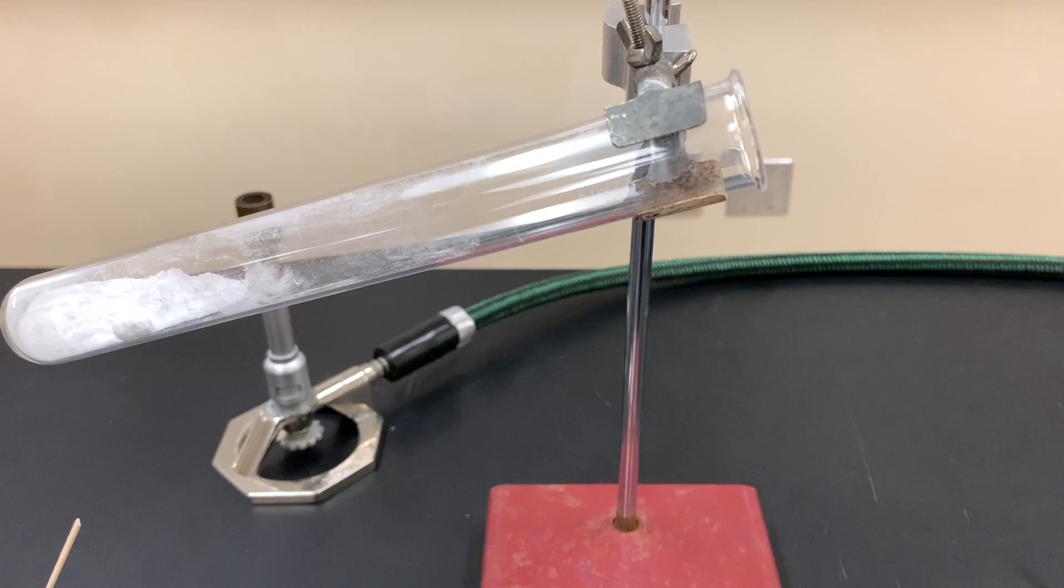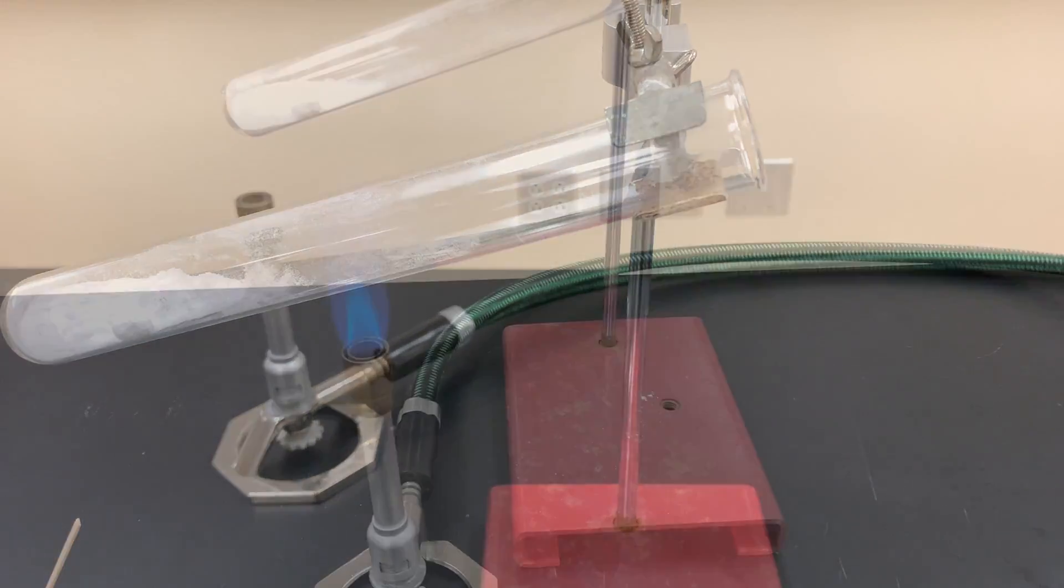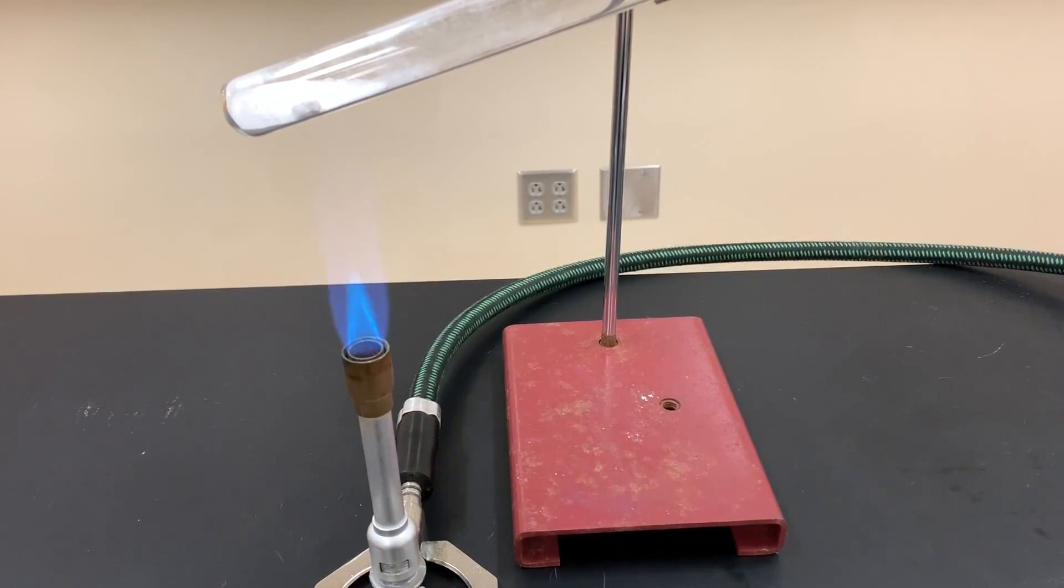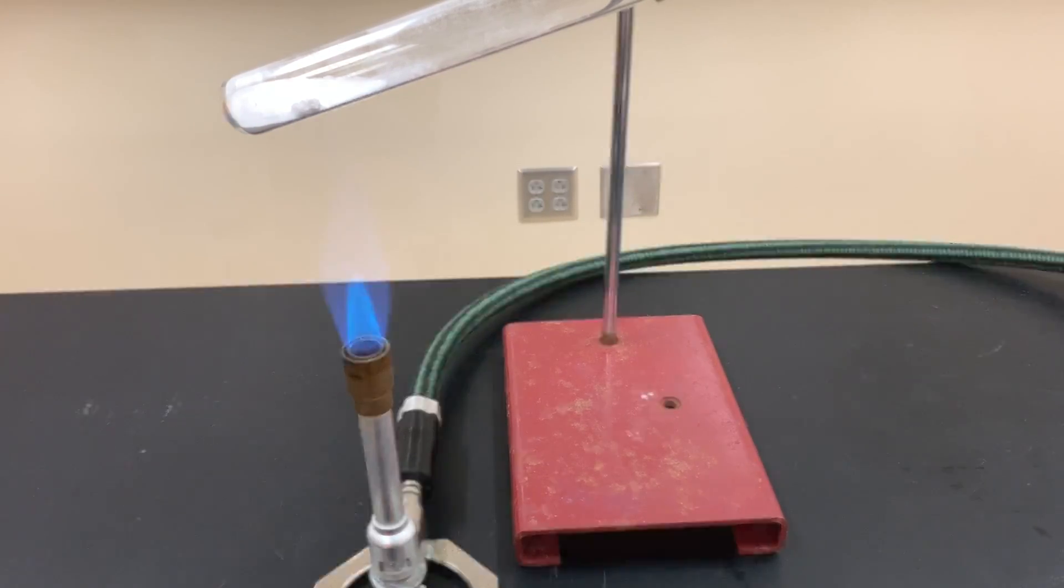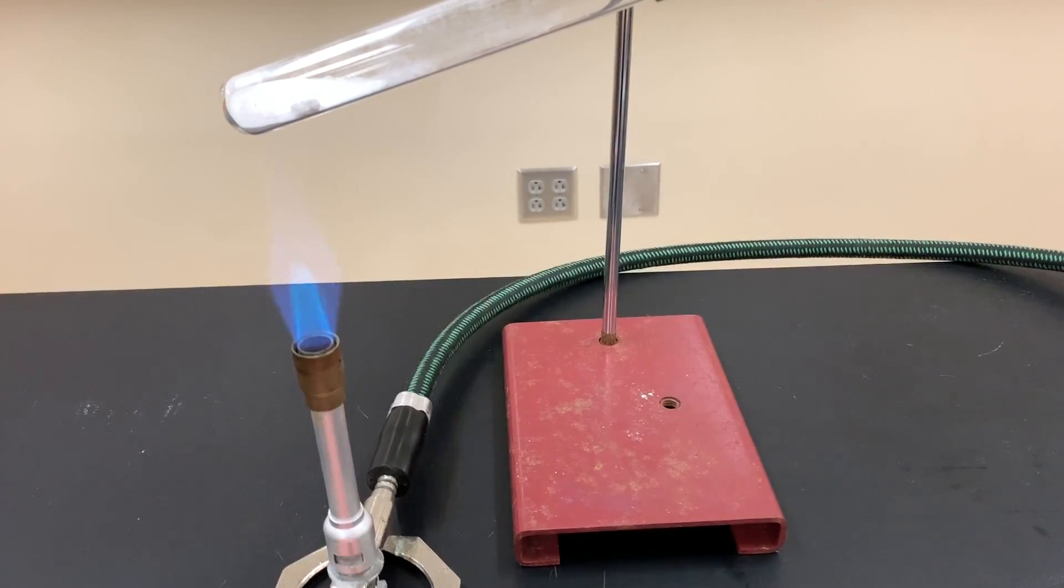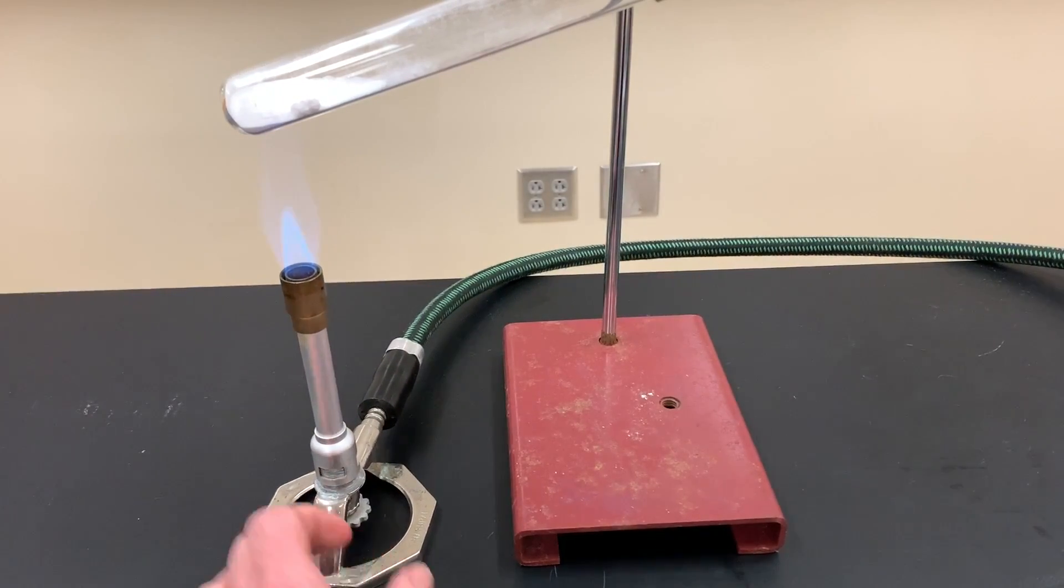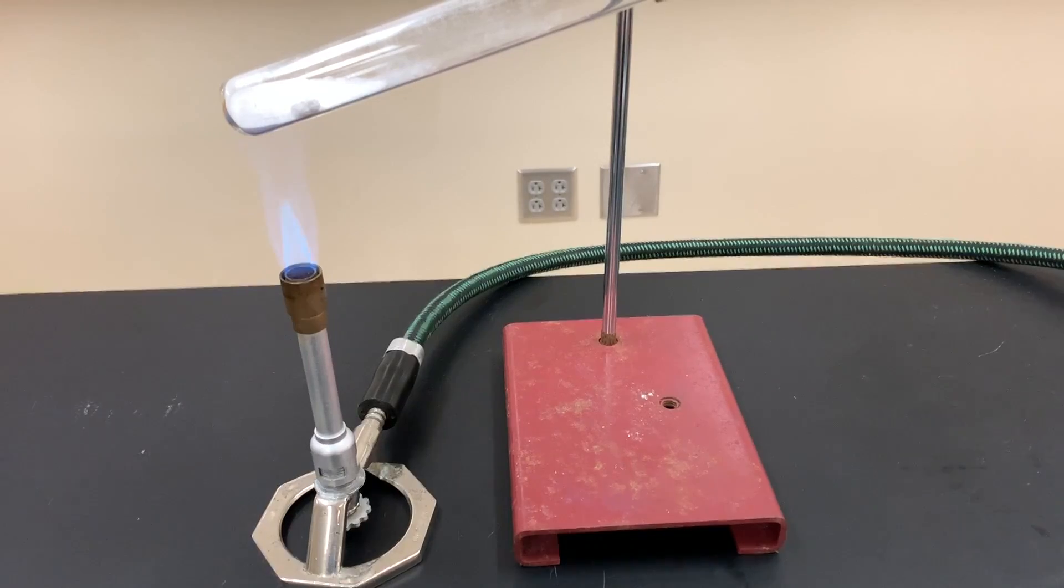The next step is to light your Bunsen burner and have an inner and outer blue cone flame like that at kind of a low heat or medium heat first. You're then going to take your Bunsen burner and put it underneath the end of the test tube. So you're going to heat this test tube for about 10 minutes, start with kind of a low heat looking for any kind of chemical change that you are looking for.